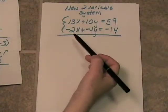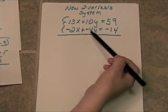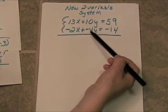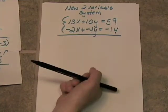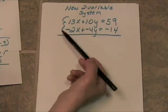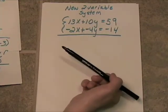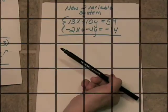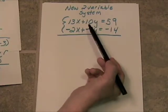I need to find a common multiple of either 10 and 4, or 13 and 2. 26 would work over here, and 20 would work over here. I think I'm going to use 20.